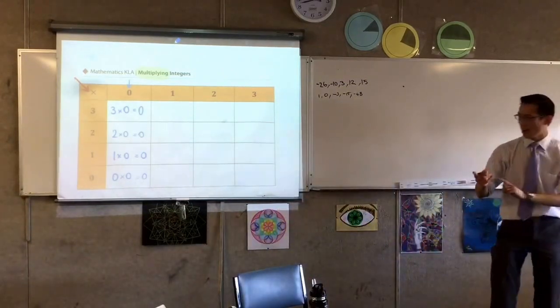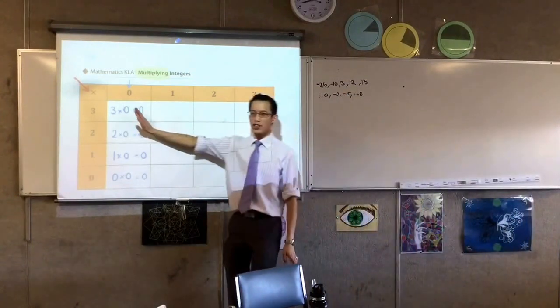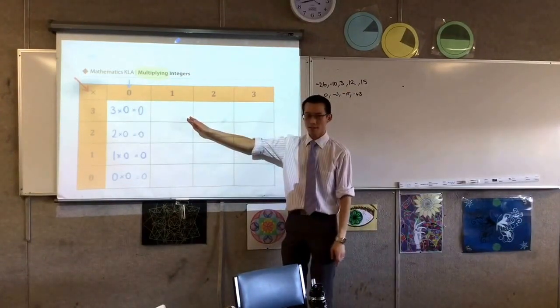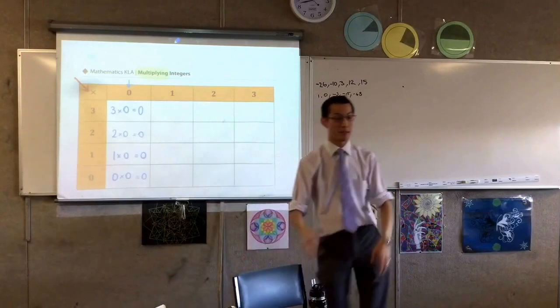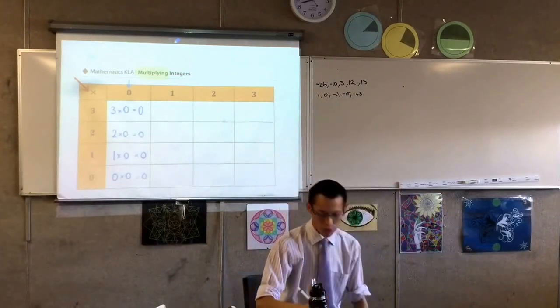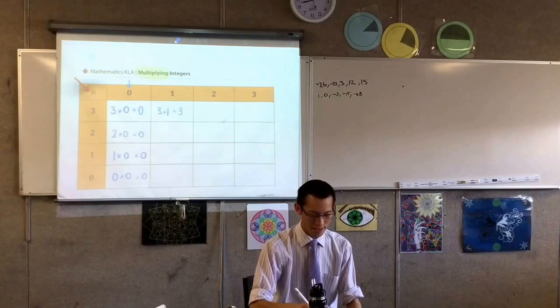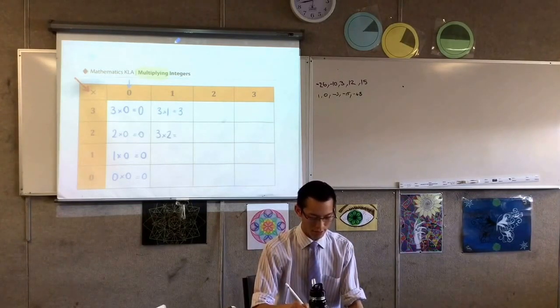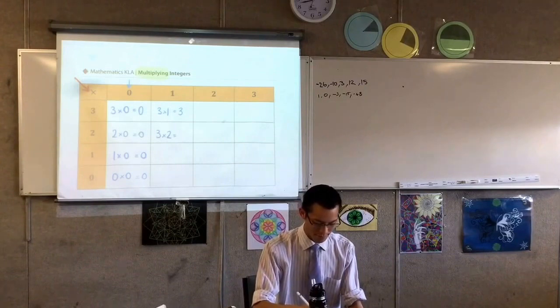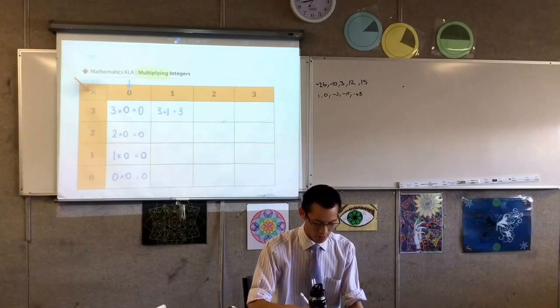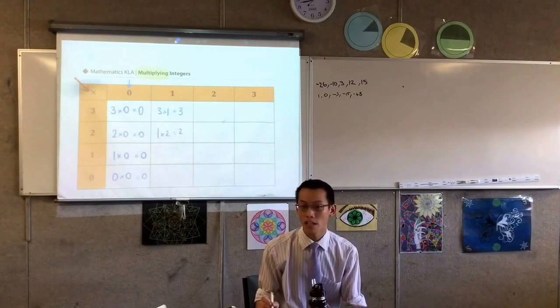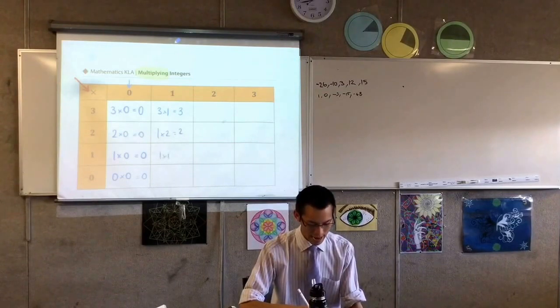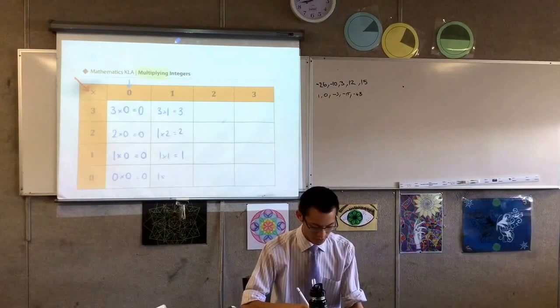Okay? So you can see here, if I were now to go over to the right here, I can continue this pattern. The pattern's what I'm after. Three times one is three. Three times two is three. Sorry, one times two. Sorry. One times two is two. One times one. One. And the last one. Zero. One times zero is still zero.